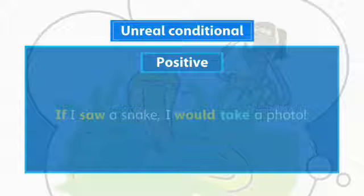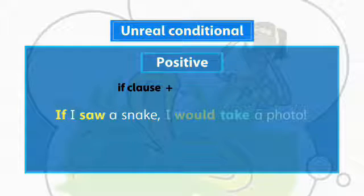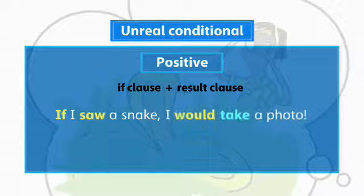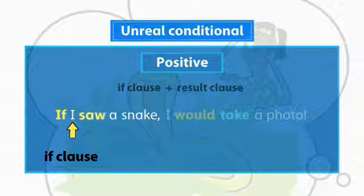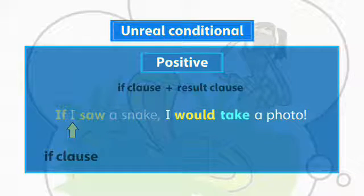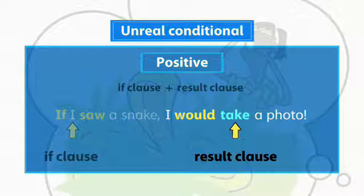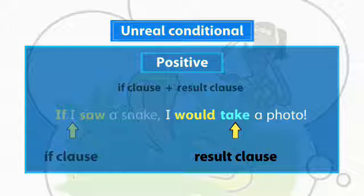We form the Unreal Conditional with an IF clause plus the RESULT clause. We form the IF clause with IF plus the SIMPLE PAST. We form the RESULT clause with WOULD or WOULDN'T and a verb without TO. We can contract WOULD.